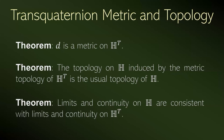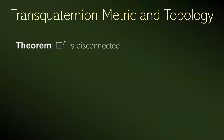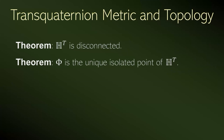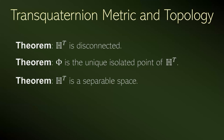There are some consequences of this topology in the transquaternion space. For example, the transquaternion space is disconnected, and nullity is the unique isolated point, as similarly occurs in transcomplex or transreal space. The transquaternion space is a separable space and a compact space — the points at infinity make it compact. And transquaternions form a complete metric space.